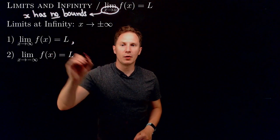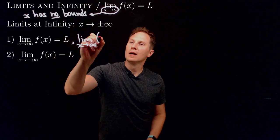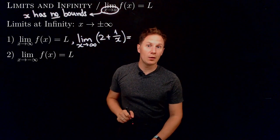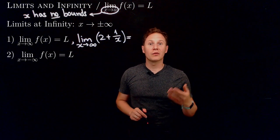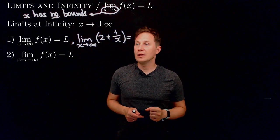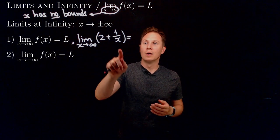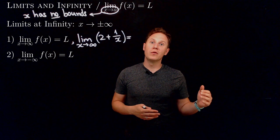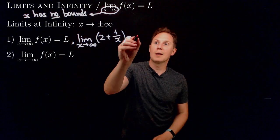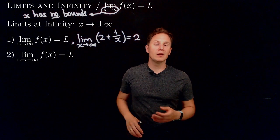To give a concrete example of a limit at infinity, let's consider the limit as x approaches positive infinity of 2 + 1/x. As x gets greater and greater, its reciprocal 1/x gets closer and closer to zero, so adding those numbers to 2 gives values that get closer and closer to 2. So intuitively, this limit at infinity equals 2.